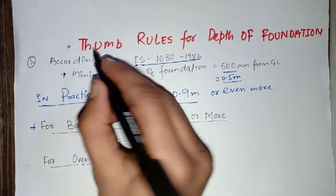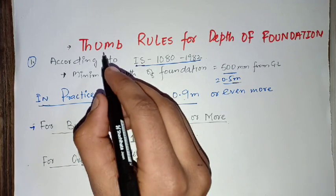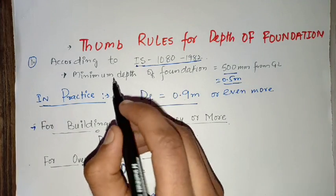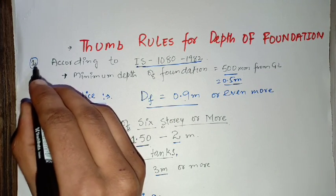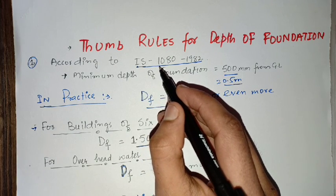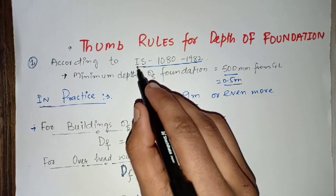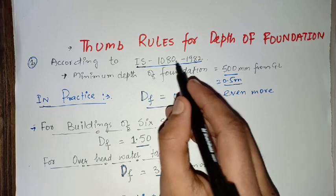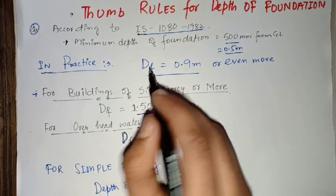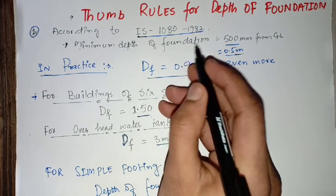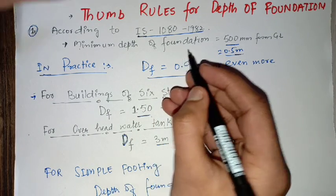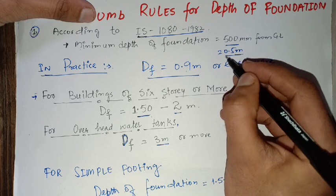The next point is about thumb rules for depth of foundation. These are not ordinary thumb rules — they are taken from the Indian Standard Code 1080, 1982. The first rule is that the minimum depth of foundation that must be provided is 500 mm.